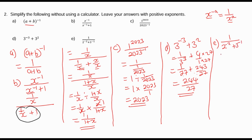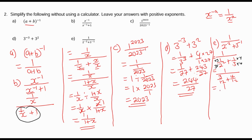For part e, we have 1 over (2 to the power negative 2 plus 3 to the power negative 1), which becomes 1 over (1 over 4 plus 1 over 3). The LCD of 4 and 3 is 12, so we get 1 over (3 over 12 plus 4 over 12). The denominators are now the same, so we add the numerators to get 1 over (7 over 12). This is the same as 1 divided by 7 over 12, which equals 12 over 7.